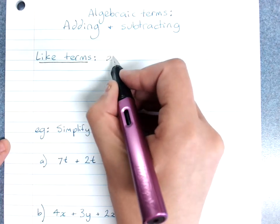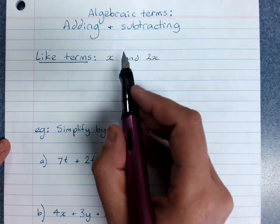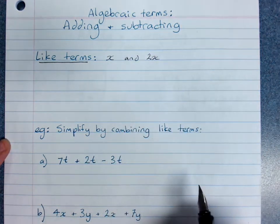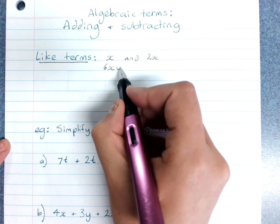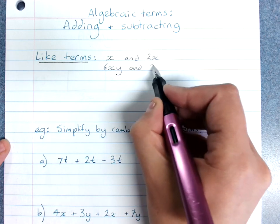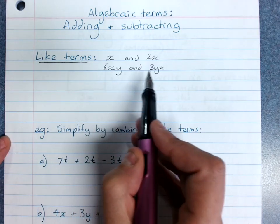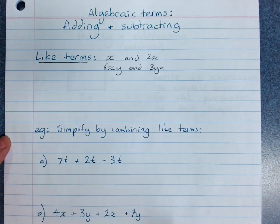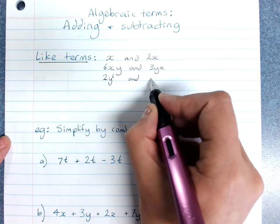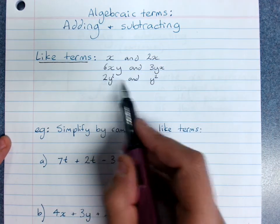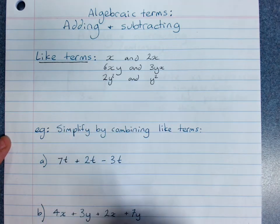So x and 2x are like terms because they've got exactly the same pronumerals in them. 6xy and 3yx are still like terms because they've got the same pronumeral parts - they don't need to be in order. 2y squared and y squared are like terms because they've got the same pronumeral parts and the pronumerals have the same powers.